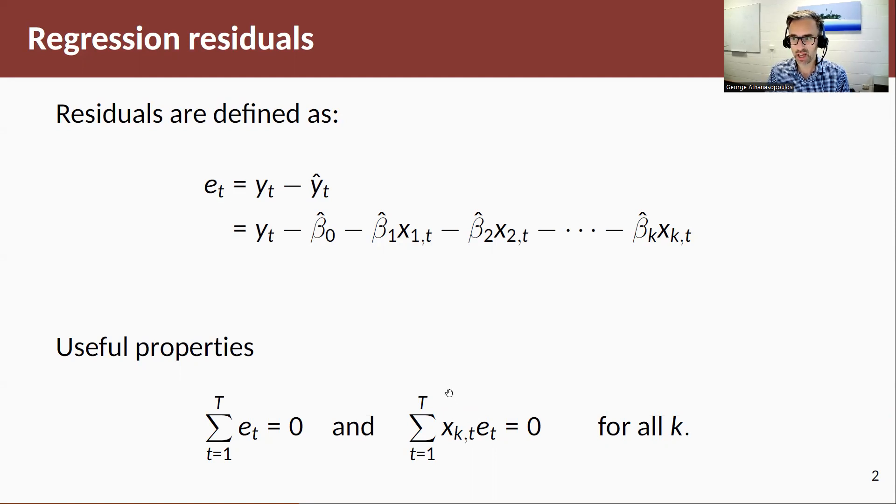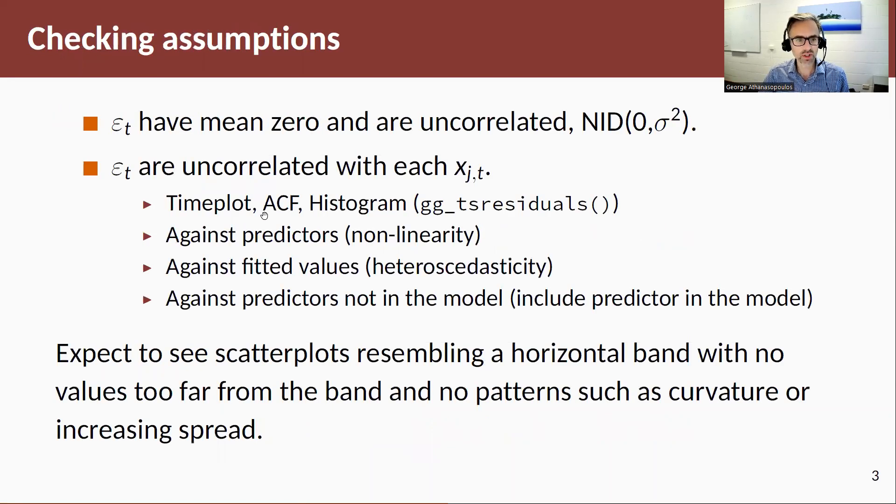Although they have these useful properties, it is always wise to go and check these residuals against the assumptions that were made for the errors of the model. Just to remind you, the assumptions we made are that errors have mean zero and are uncorrelated, and the additional assumption that they're normally distributed, which is useful for prediction intervals.